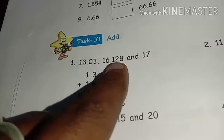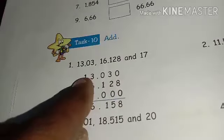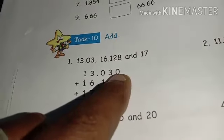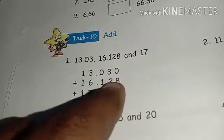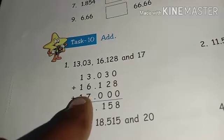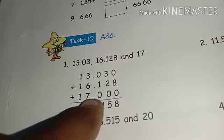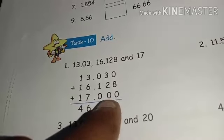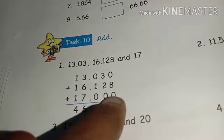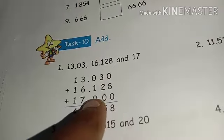Like decimal score is right. First one, 13.03. It's 13.03 to zero zero. 16.128 again. Next, 17. 17 means 17.00, you can write number zero zero. We have to line up the decimal points and add it.